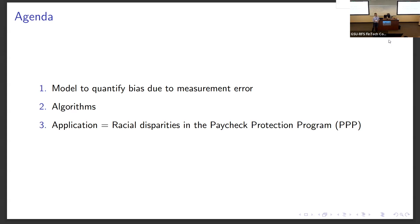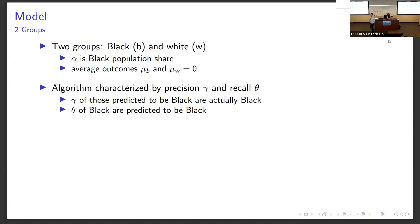I call it a model, but it's really embarrassingly simple algebra. It was helpful for clarifying our thinking about what happens when we use predicted race. I'll start with a case of just two groups, and since our empirical analysis shows the biggest disparity for black-owned firms, I'll refer to the two groups as black and white.